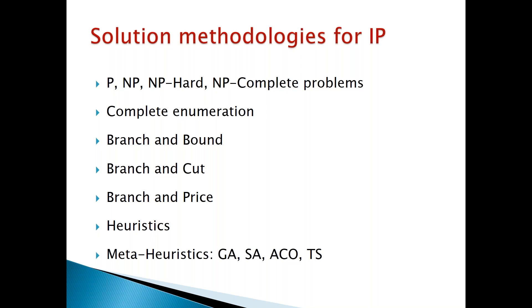You might ask, what is the big difference? In one case we are allowing variables to take fractional values, whereas in the other case variables can only take integral values. The difference between these two problems is quite significant, because for solving linear programming problems we make use of the simplex method. Simplex method simply checks the vertices of the feasible region, evaluates the objective function at those vertices, and whichever vertex is the best — whether minimization or maximization — it chooses that as the final solution.